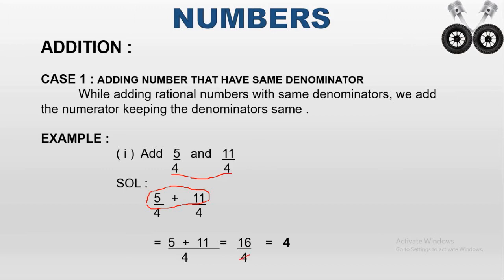Now we can simplify 16/4. Since 4 fours are 16, we get 4. So if we add 5/4 and 11/4, the answer is 4.